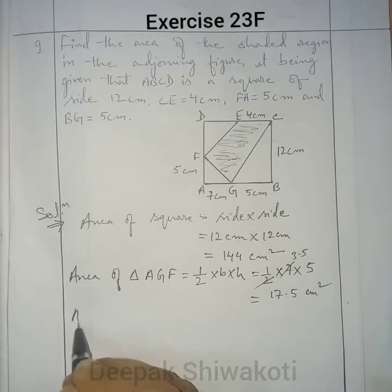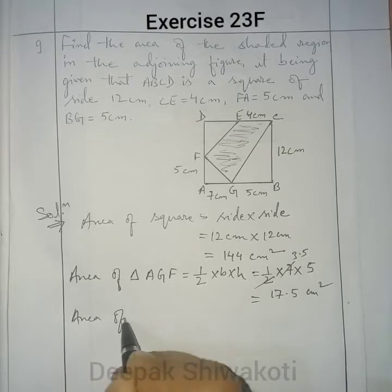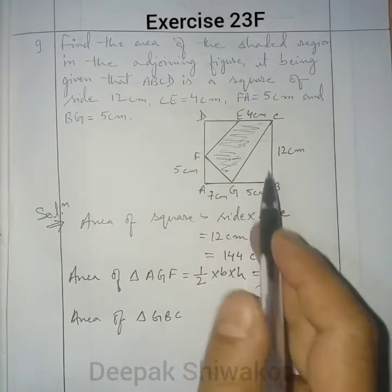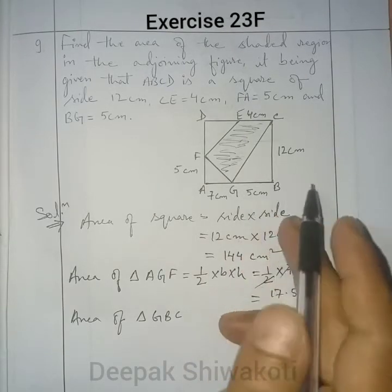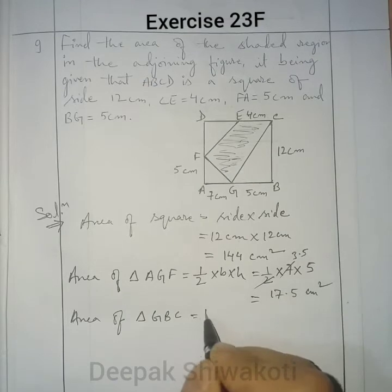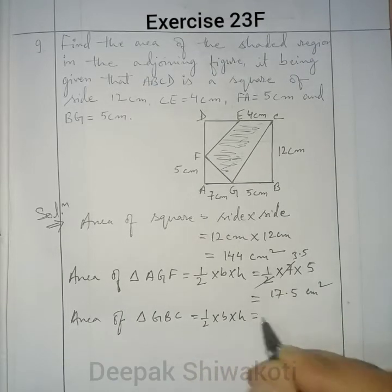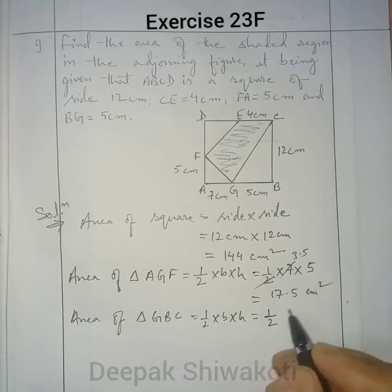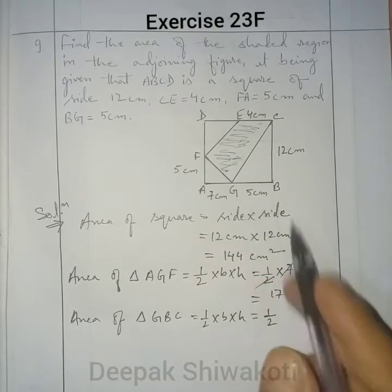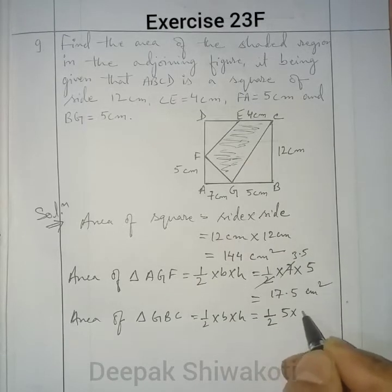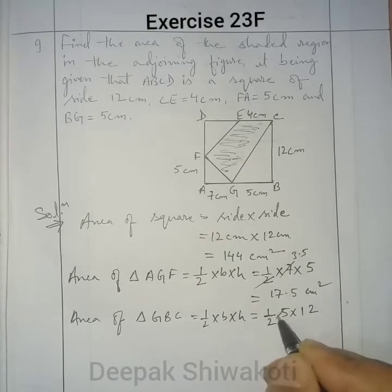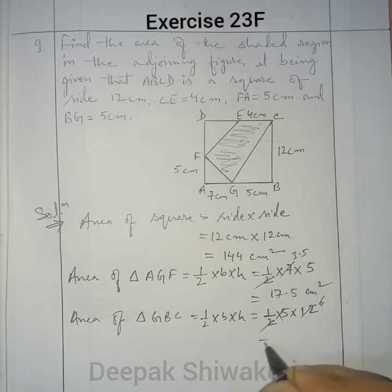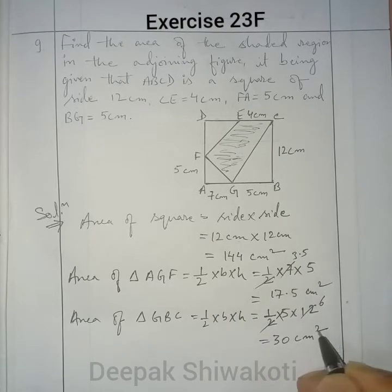Similarly, the area of triangle GBC — here the base is 5 and height is 12. Using the same formula, half × base × height: half × 5 × 12 = 30 cm².